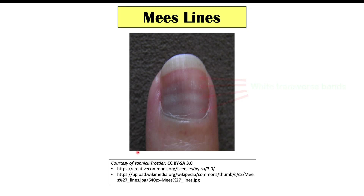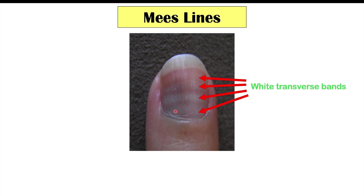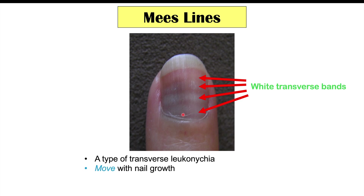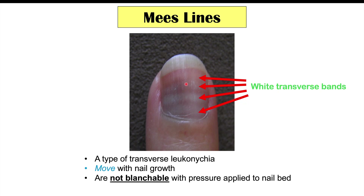Another nail finding that can be seen in celiac disease is Mees' lines. These look the same as Muehrcke's lines — white transverse bands on the nail — and are also a type of transverse leukonychia. The key difference is that Mees' lines move with nail growth, whereas Muehrcke's lines do not. Additionally, Mees' lines are not blanchable — pressing on the nail bed will not make them disappear. This is very rare in celiac disease but can occur in more severe cases.